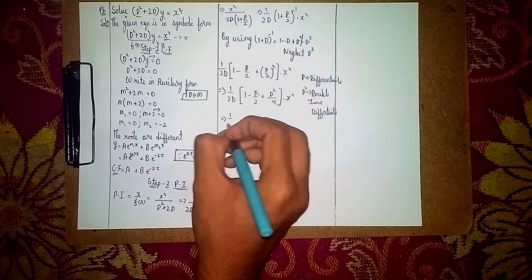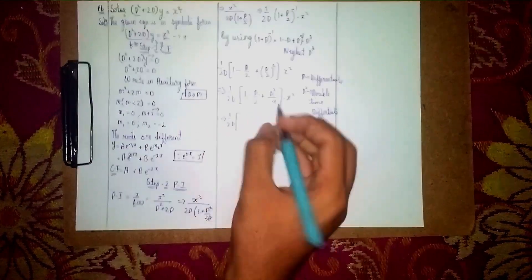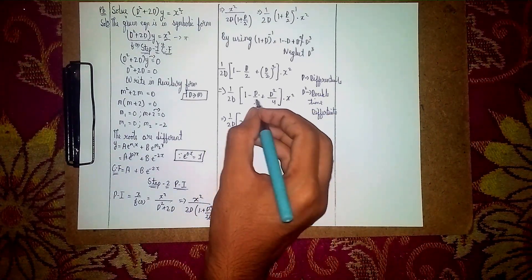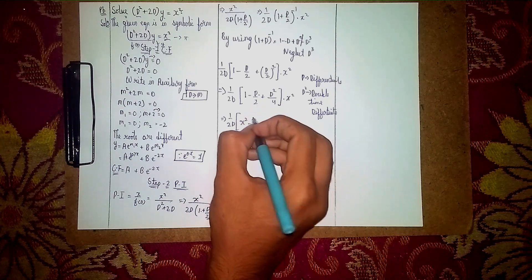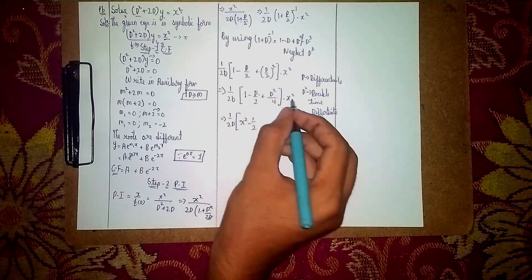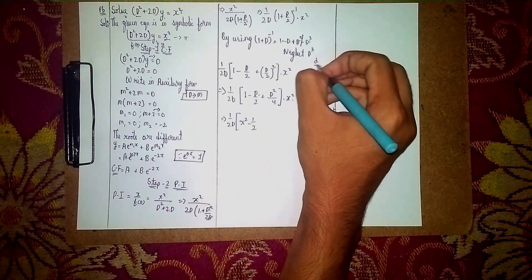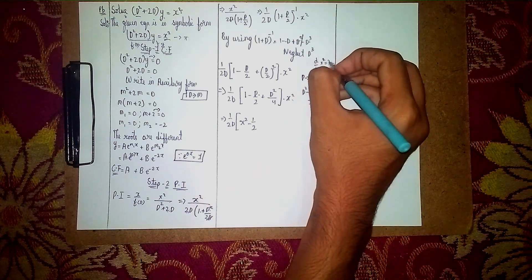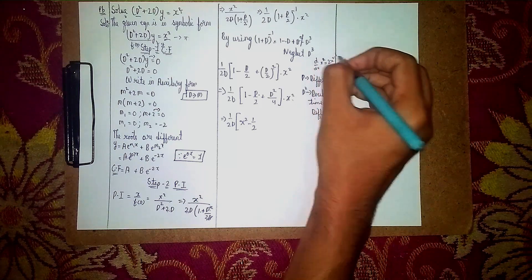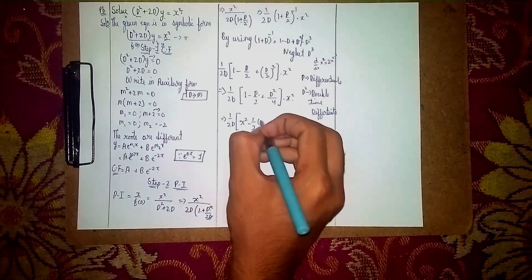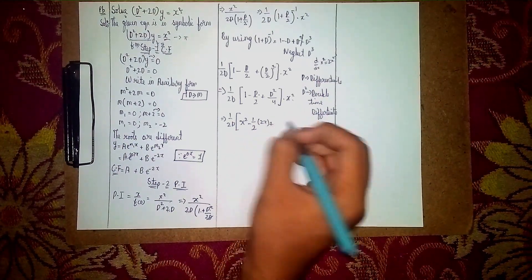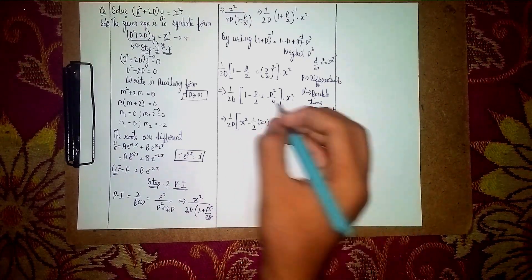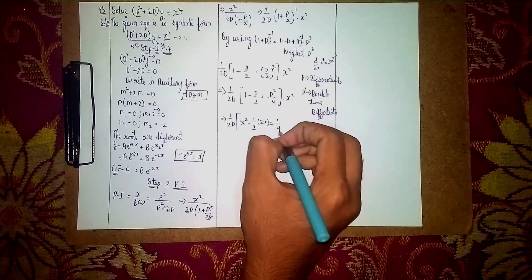Multiplying out: 1 into x² = x². For the D/2 term, take 1/2 out: (1/2)·d/dx(x²) = (1/2)·2x = x. So the second term becomes −x.